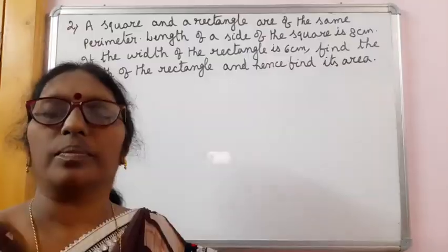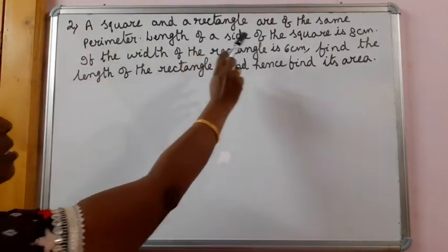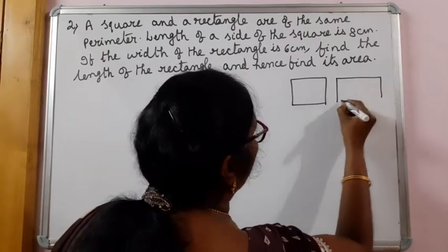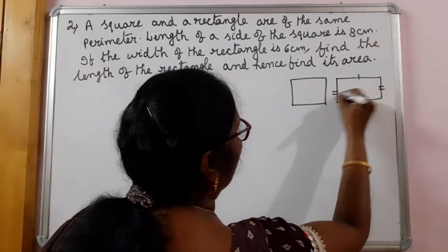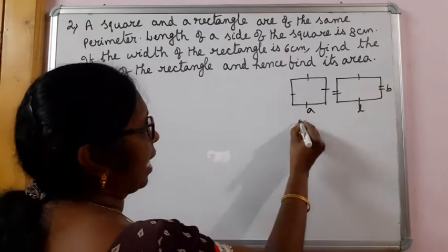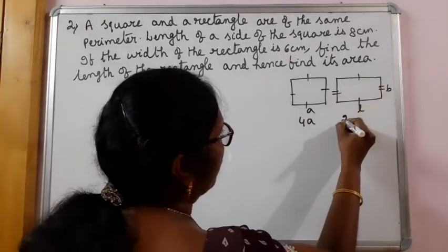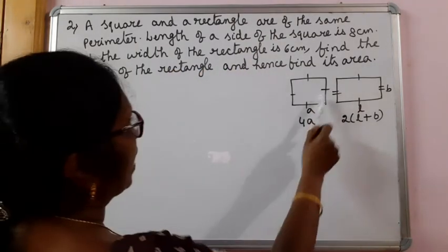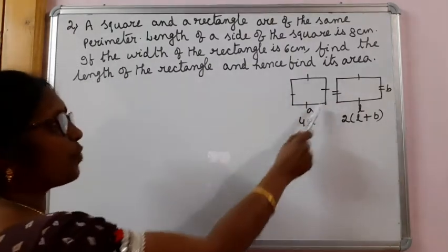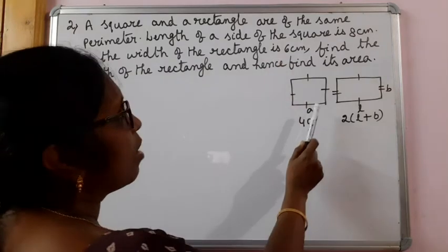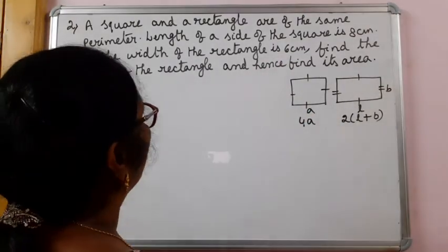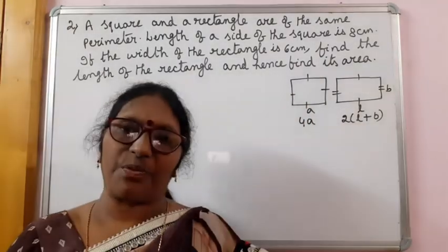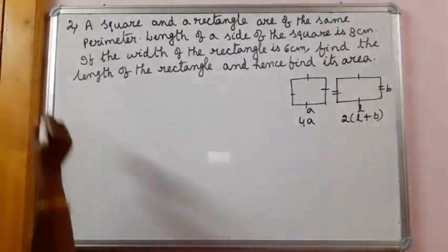Now let us have one more problem. A square and a rectangle are of the same perimeter — both are of the same perimeter. If the length of the rectangle is L, breadth is B, and side of the square is A, we know that perimeter of a square is 4A and perimeter of the rectangle is 2 into L plus B, and these two perimeters are equal. Side of the square is given, so we can find the perimeter of the square, and if the width of the rectangle is given, we can find the length, and after getting the length we can find the area using L into B.